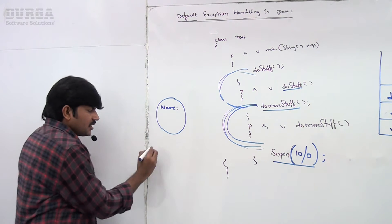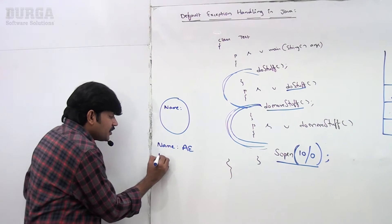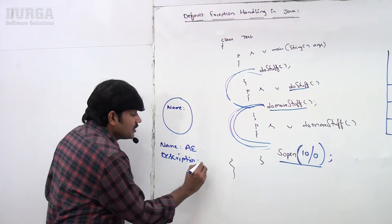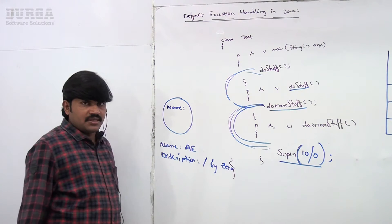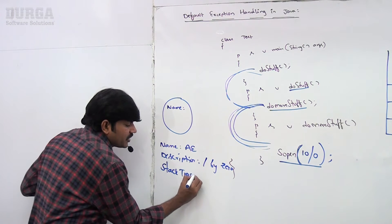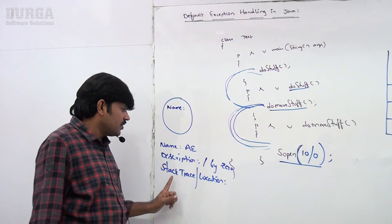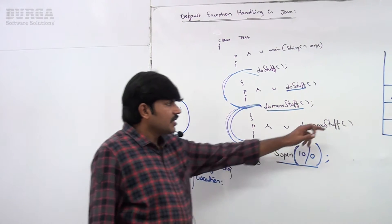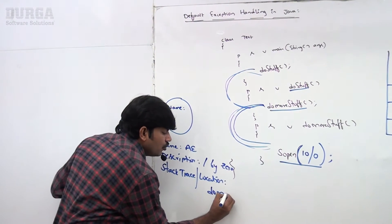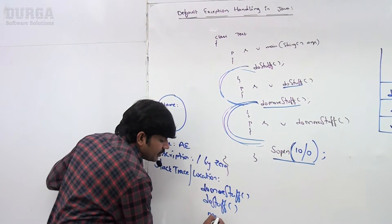With the help of JVM, the exception object is created. In this object, the following information is added: name of the exception — ArithmeticException; description of the exception — division by zero; and stack trace, i.e., the location where the problem came. The location is inside doMoreStuff, which is called by doStuff, which is called by main. This is the complete stack trace.